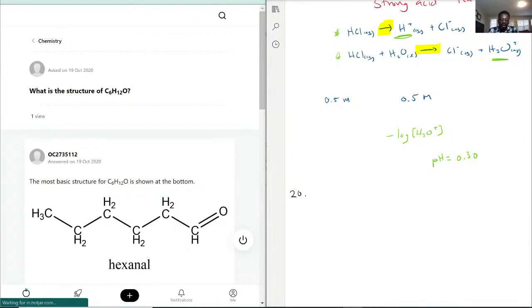Final question for today: what is the structure of C6H12O? Unfortunately you see the answer right there. So I do have another question for this, which is going to be what type of molecule is this?